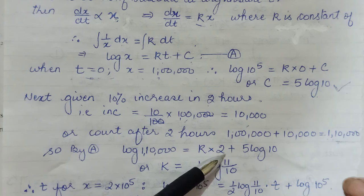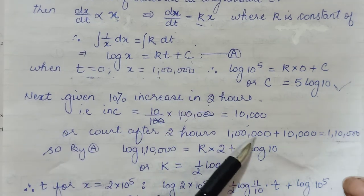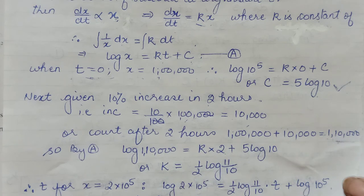in the next go, same equation we got. Now if I put the count value as 1 lakh 10,000, that was when my t was 2, after 2 hours. And constant of integration we had evaluated. That also we will put here. This will help us find our k.